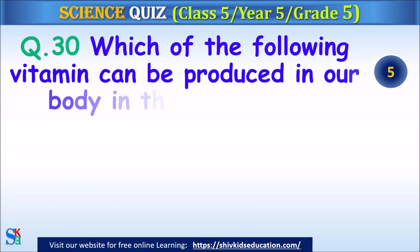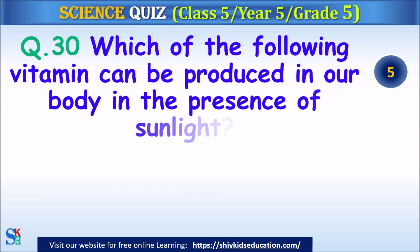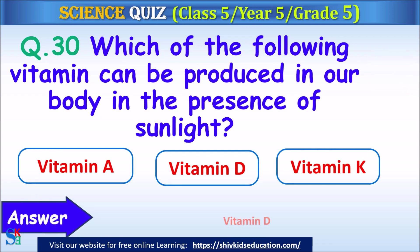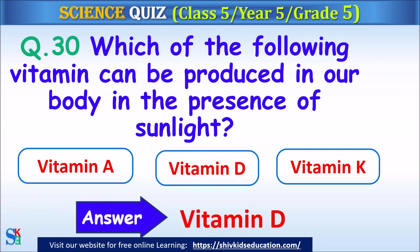Question 30: Which of the following vitamins can be produced in our body in the presence of sunlight? Vitamin A, vitamin D or vitamin K? The answer is vitamin D.